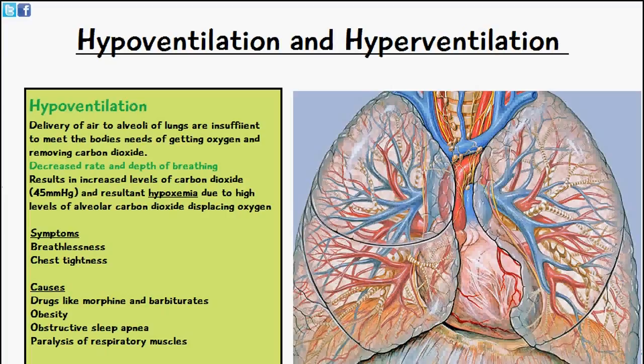Hypoventilation also results in increased levels of carbon dioxide to levels of 45 millimeters of mercury. It also results in hypoxemia, which is where we have low levels of oxygen in the blood, and that's going to be due to high levels of alveolar carbon dioxide displacing oxygen in the alveoli.